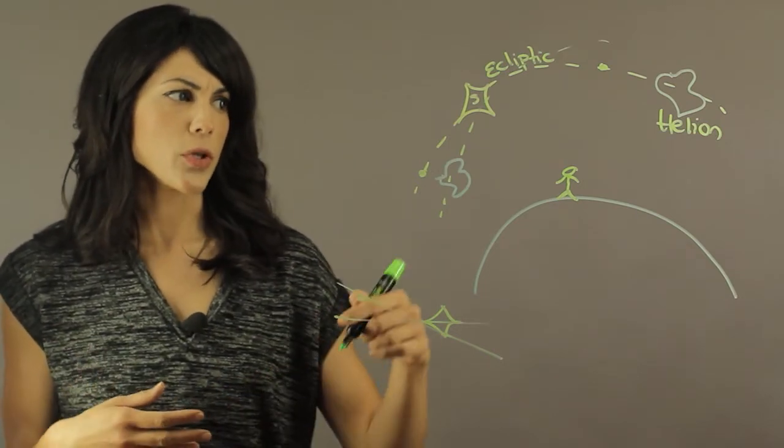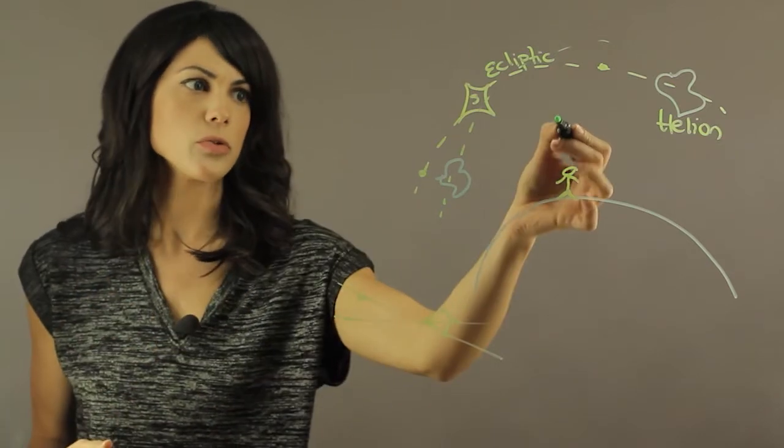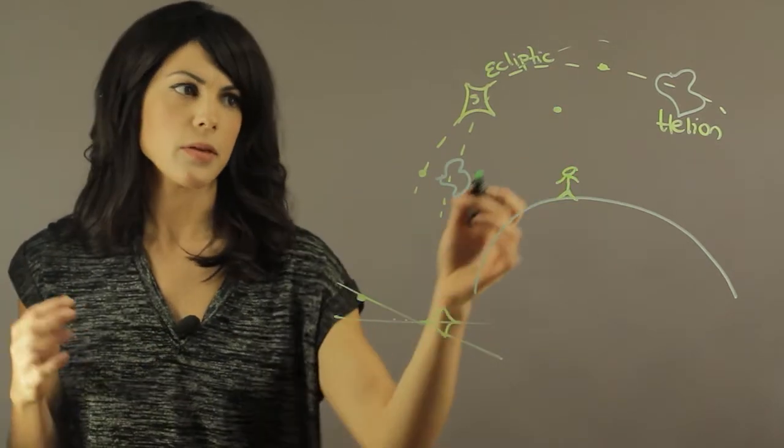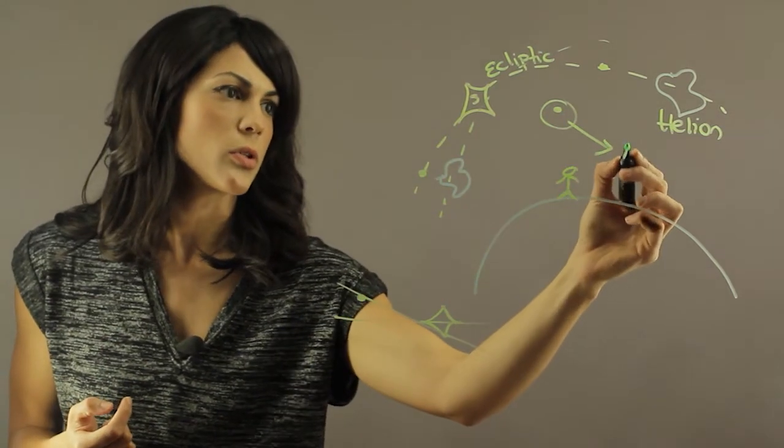Now another one is when you have debris heading on directly to Earth. So you'll see this, they can be really anywhere. So if you have debris coming directly towards Earth, this is called the apex.